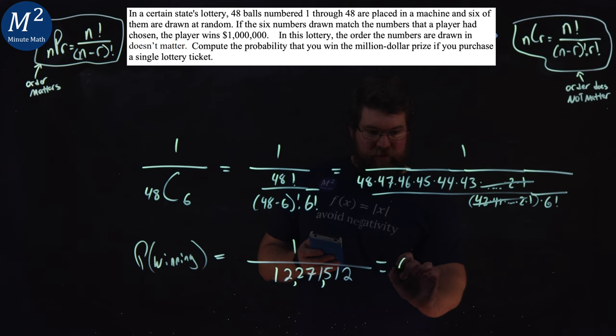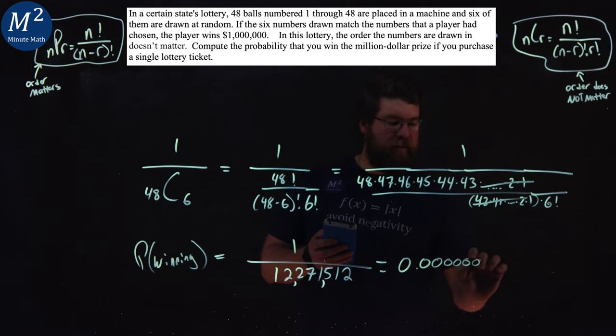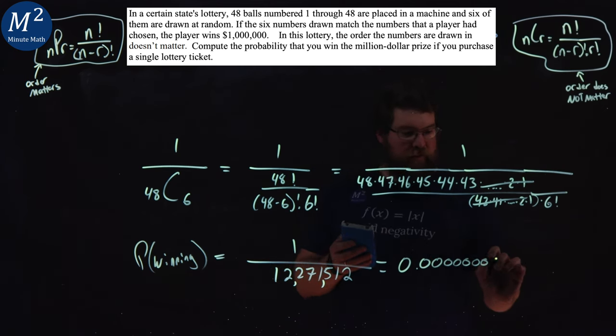And if we write that as a decimal here, it's a 0 point, and then it's going to be 7 zeros, and then 815 rounded.